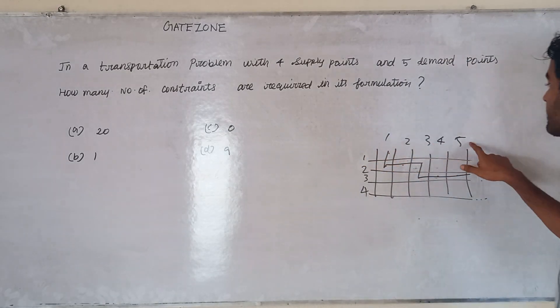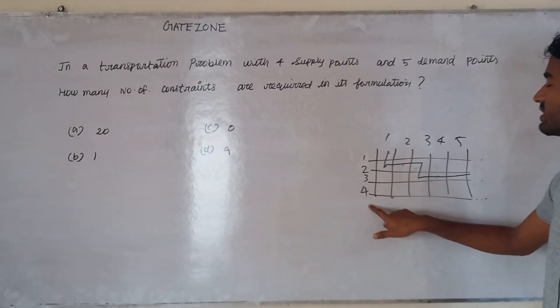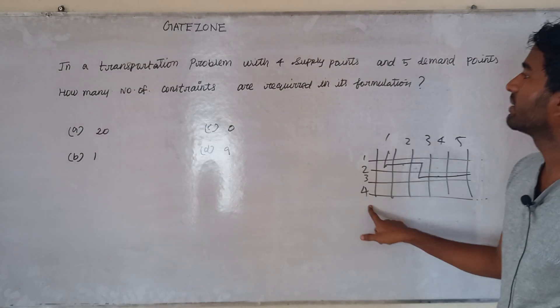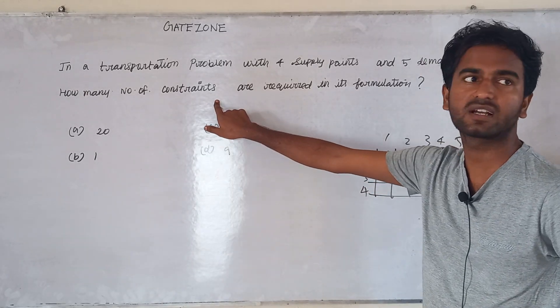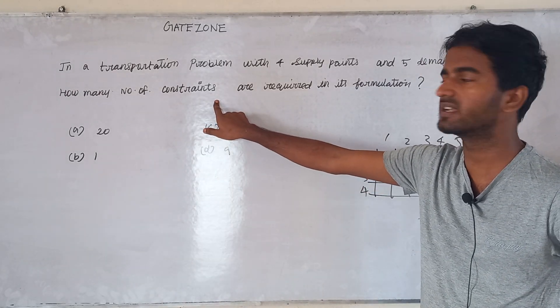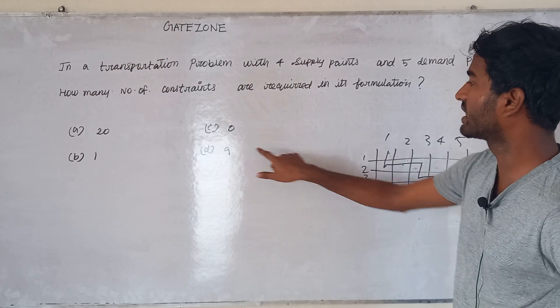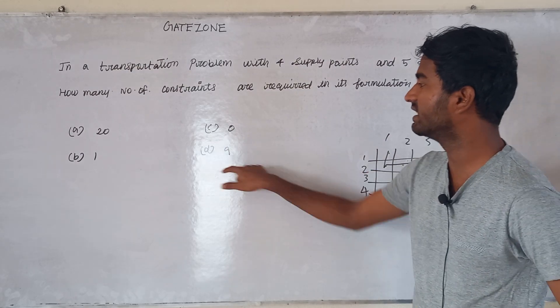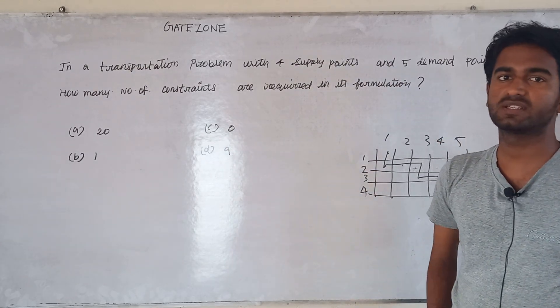If we get 5, we get 4. The total number of constraints is M plus N — 5 plus 4 equal to 9. Thank you champions.